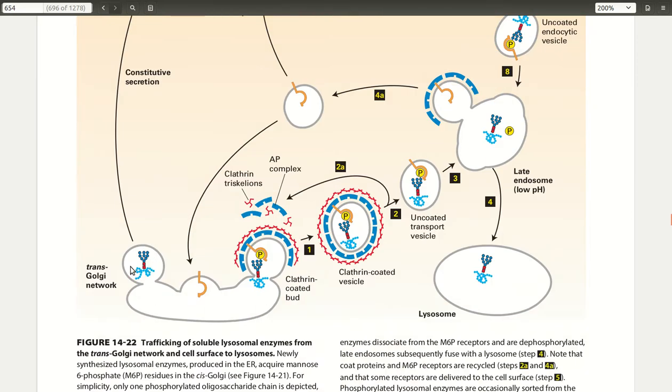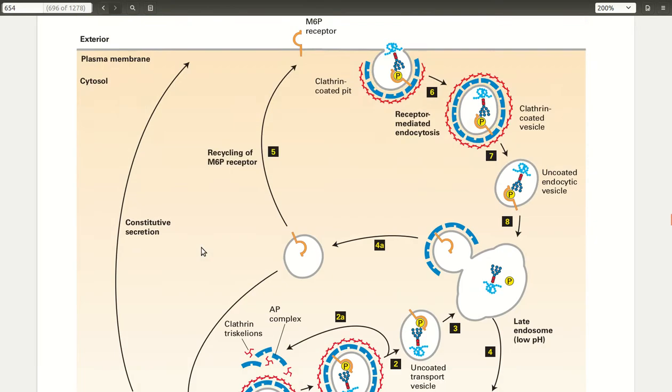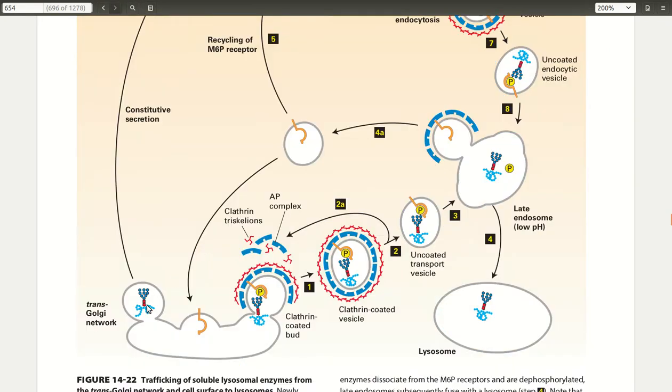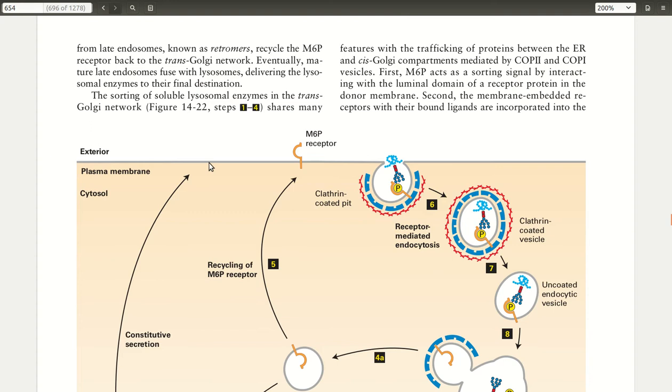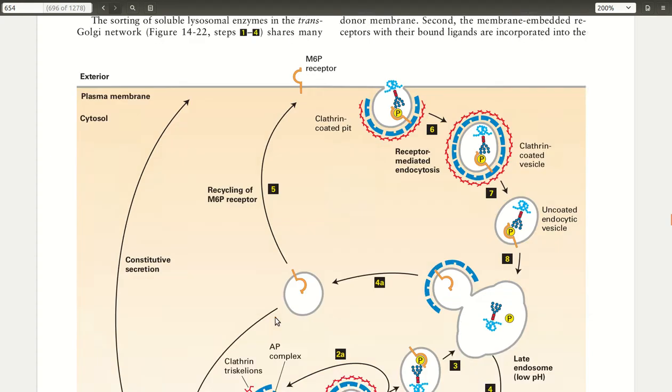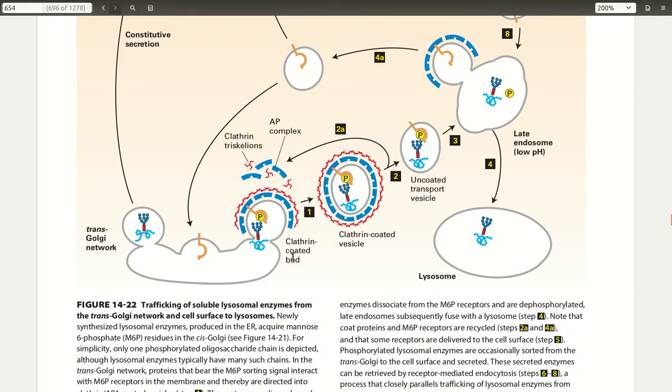For proteins that are bound for extracellular transport, they go directly from the trans Golgi network and bud off into the plasma membrane through constitutive secretion, and they do not require clathrin-coated buds.